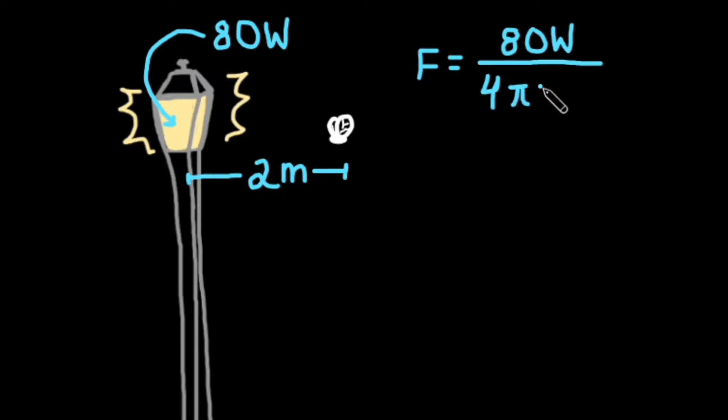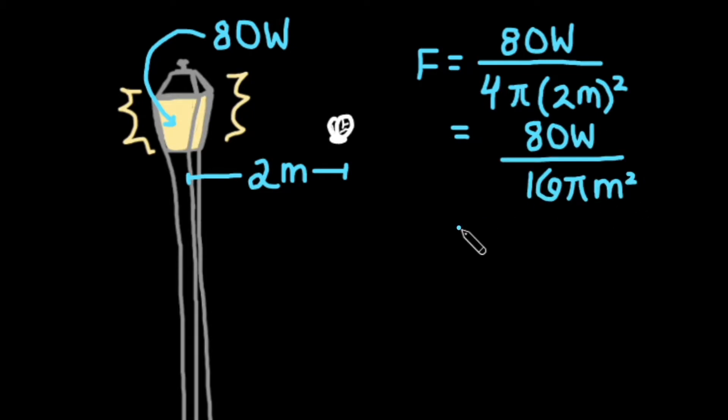Consider a streetlight. If there is an 80 watt LED light inside, the streetlight will generate 80 watts of power regardless of whether or not there are observers. A fly swarming 2 meters away will experience a flux from the light bulb of 80 watts divided by 4 times pi times 2 meters squared, which is 5 divided by pi watts per square meter.